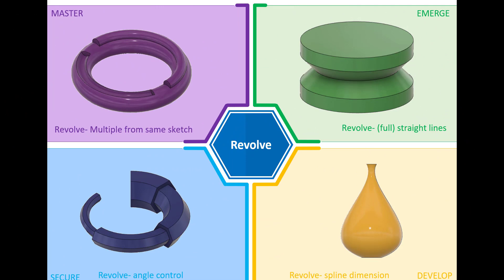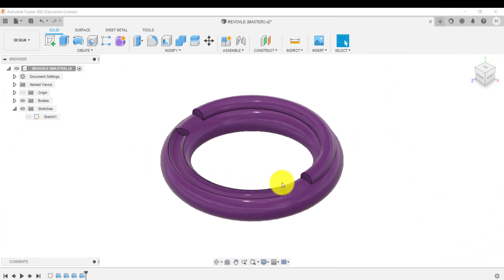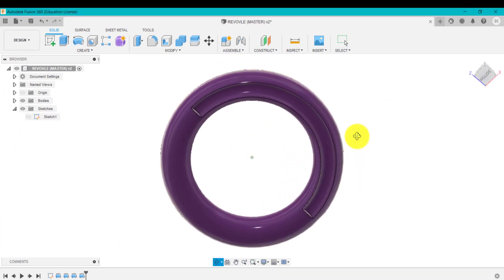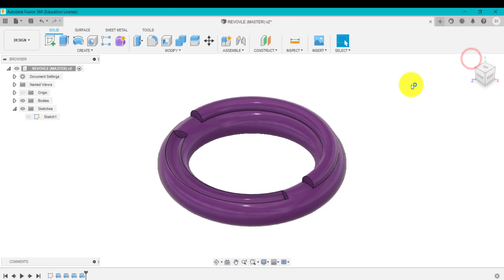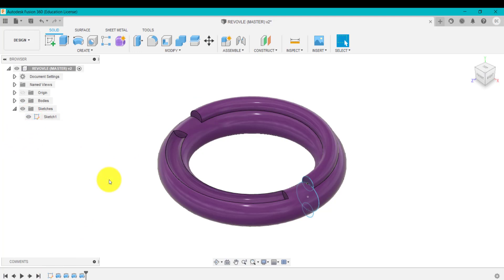The next and final activity, or challenge, is the master. If you look at the screen, what we're going to do here is create a revolve — but this time we're going to create four revolves from one single sketch, which is slightly different to the secure activity where we created four revolves from four sketches within the same design. So: four revolves from one single sketch — a good technique to learn. In Fusion 360, as you can see, we've got a number of revolves at various angles, offsets, cutting, and adding materials, all from one sketch — three circles to create this design.